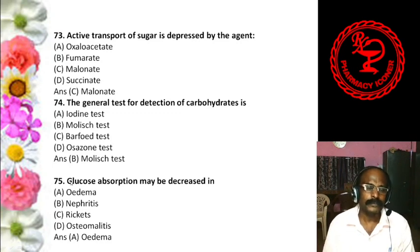Question 42: A polysaccharide which is often called animal starch is — Glycogen, Starch, Inulin, or Dextrin. The answer is glycogen — glucose is stored in our body as glycogen, and glycogen is called animal starch.